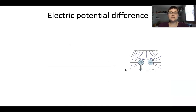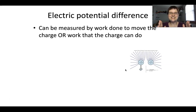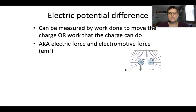The next thing to look at is what we call electric potential difference. This is a property related to electricity — it's the measurement of work done to move a charge, or work that the charge can do. It's the difference between where a charge starts and where it ends, which gives us the potential difference. It's sometimes known as electromotive force, or EMF — electro for the electricity part, motive for the moving, and force for the work.